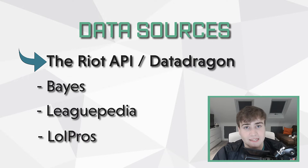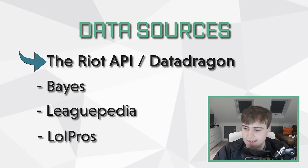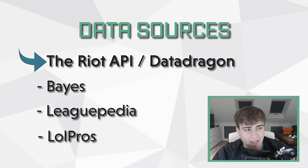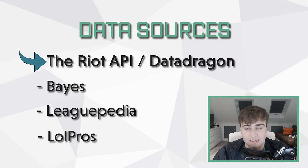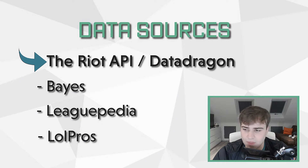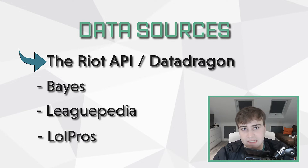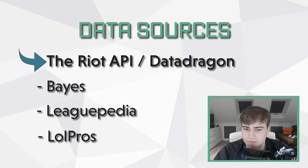The Riot API is pretty obvious in its functionality — most people know what it does. It's used for solo queue data, pretty much exclusively. The reason DataDragon is tied alongside it is because they interact with the same sort of ID system, and DataDragon holds information about champions, items, abilities, and all of that wiki metadata to do with actual values, rather than things generated from games themselves.